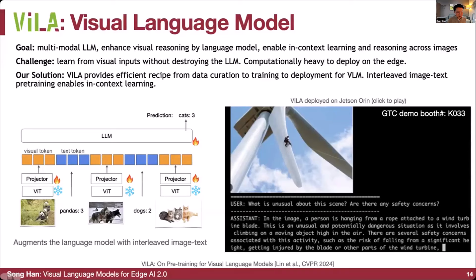For example, a panda has three animals, a dog has two, then we feed a new image and it can infer the task is counting the number of animals and say the answer is three. The challenge is to learn from visual prompts without destroying the large language model. Another challenge is that having both visual and language parts is very computationally heavy to deploy on the edge.